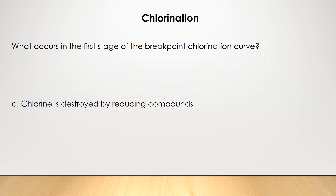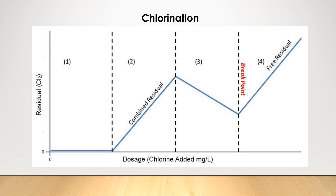Let's go over the breakpoint chlorination curve so you know why this is the correct answer. The curve tells you what's happening to the chlorine that you're injecting into the water. Starting on the left side of the graph at Stage 1, the chlorine is being destroyed by what's called reducing compounds — things like iron and manganese that are naturally present in the water. Because chlorine is reacting with these reducing compounds, there are no chlorine residuals formed. The blue line at the bottom shows the chlorine residual concentration is close to zero. This answers the previous question, but I'll finish explaining the remaining parts of the chart.